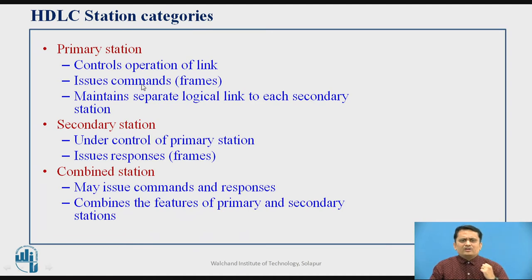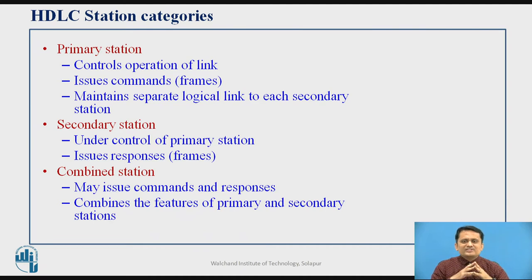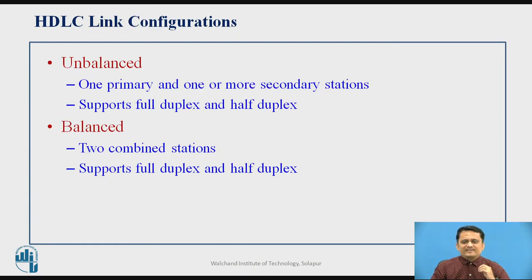In a network supporting HDLC protocol, a station may also be a secondary station. A secondary station operates under the control of the primary station and issues responses to the commands sent by the primary station. The third kind is a combined station, which is a combination of primary and secondary — it may issue commands or give responses, combining the features of both primary and secondary stations.